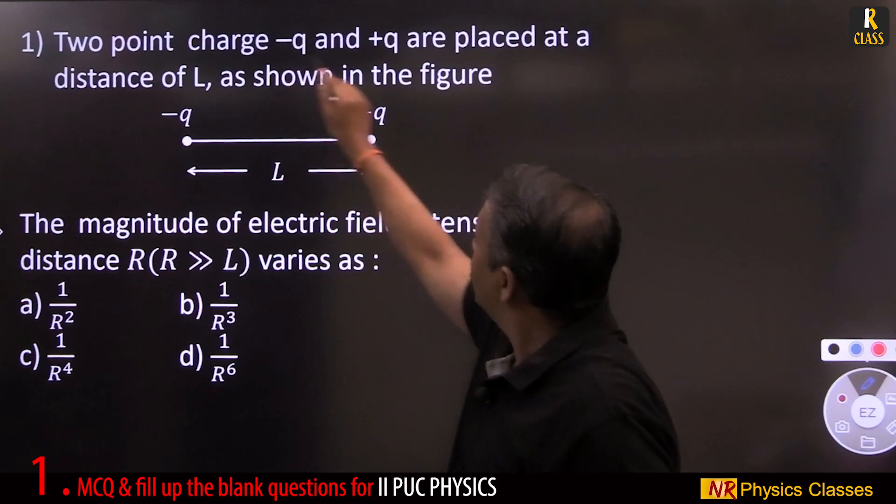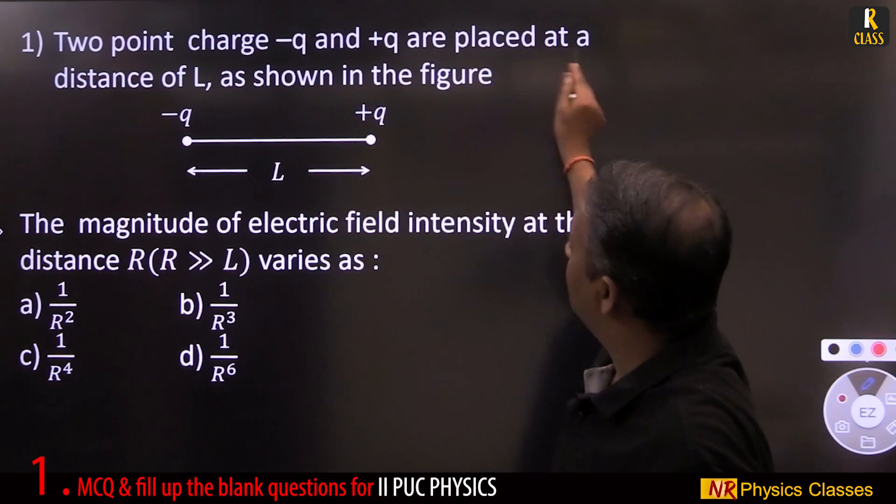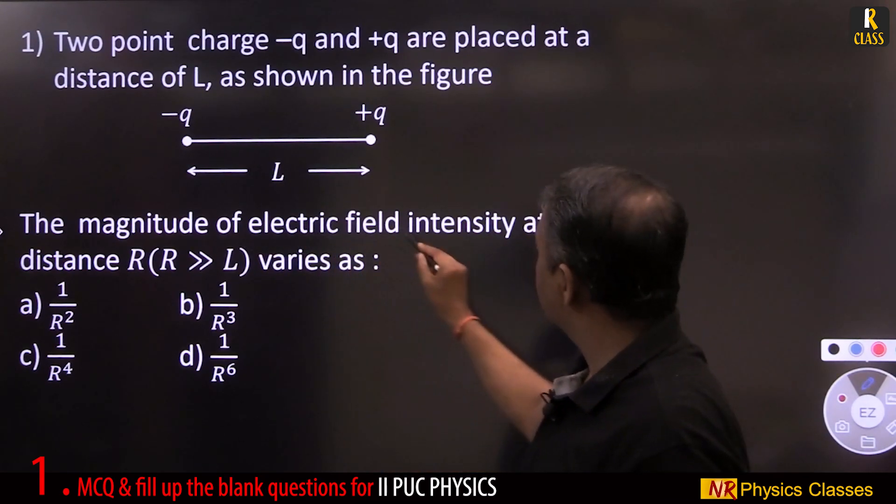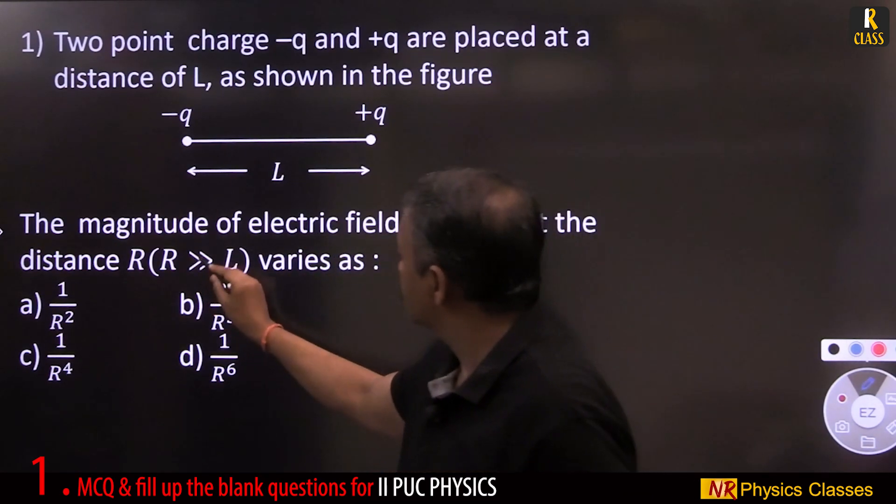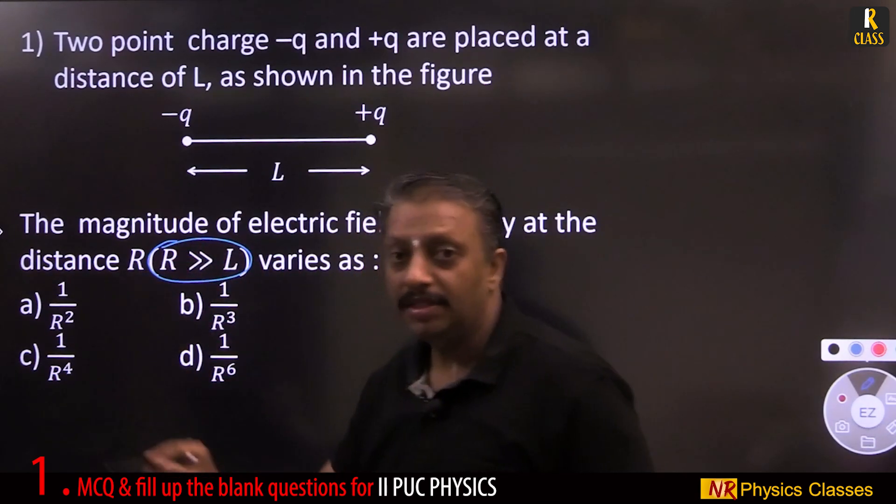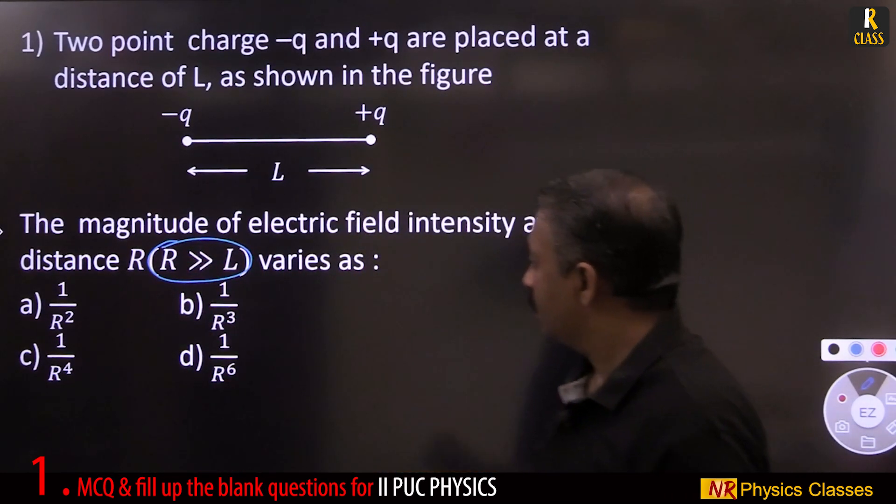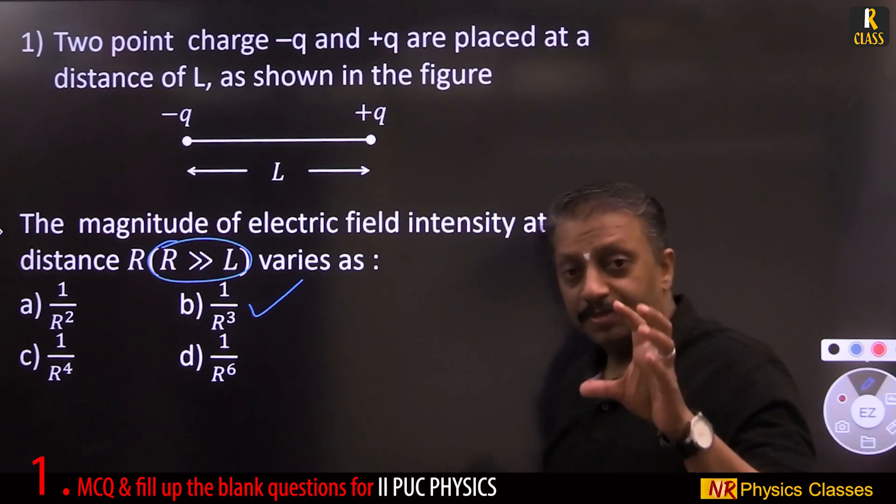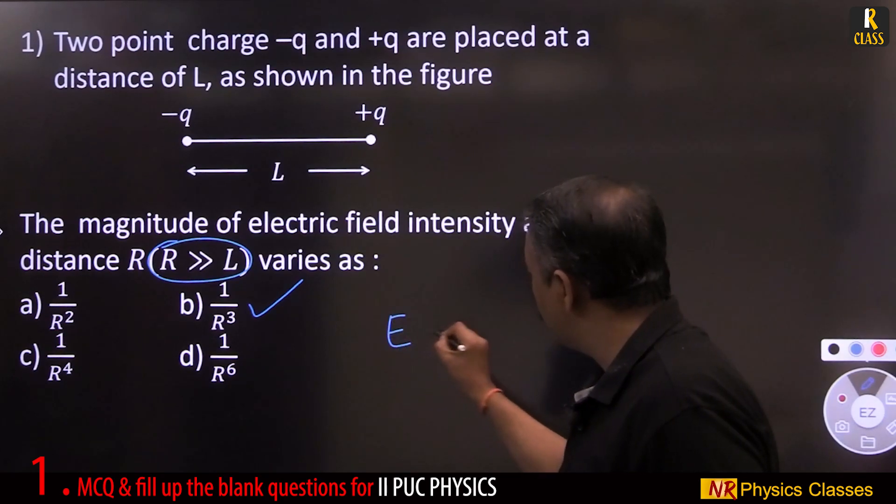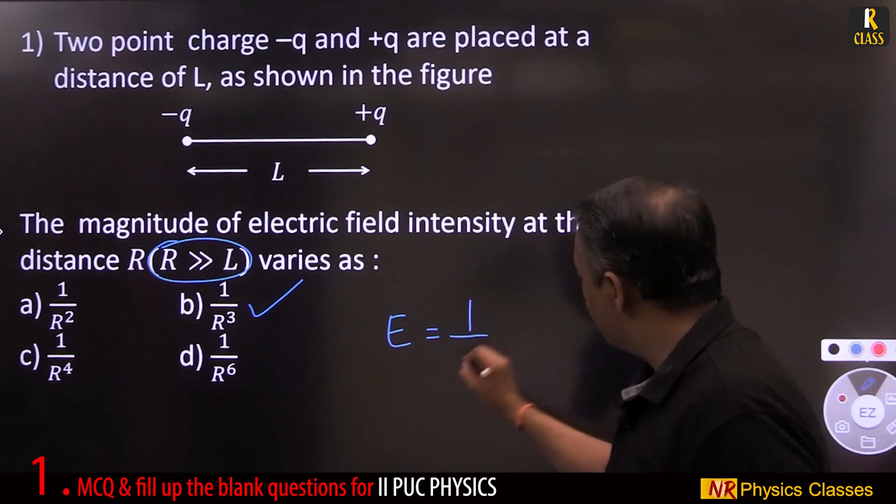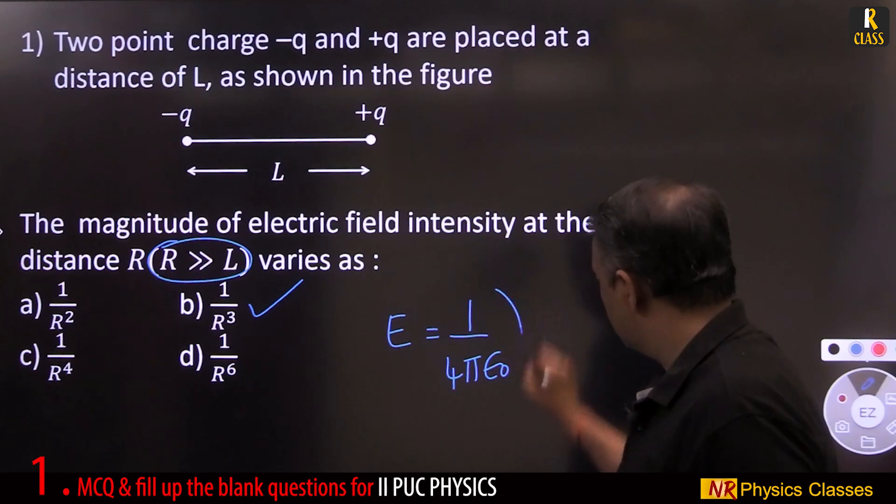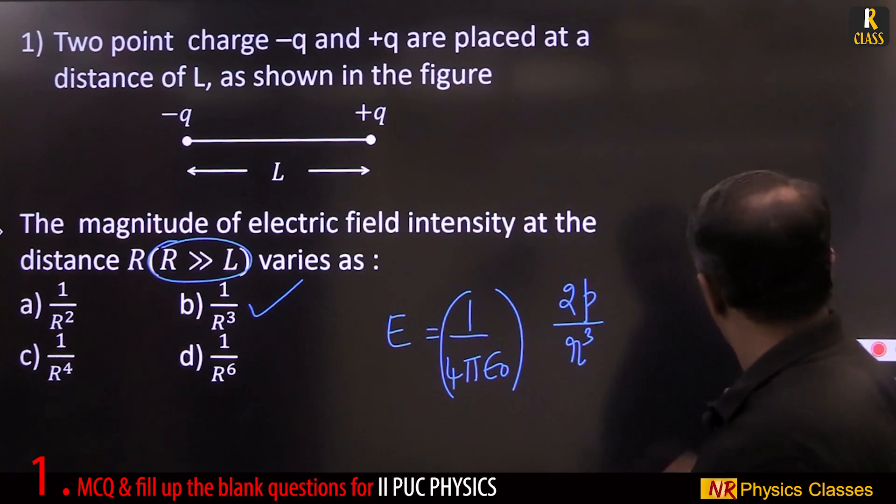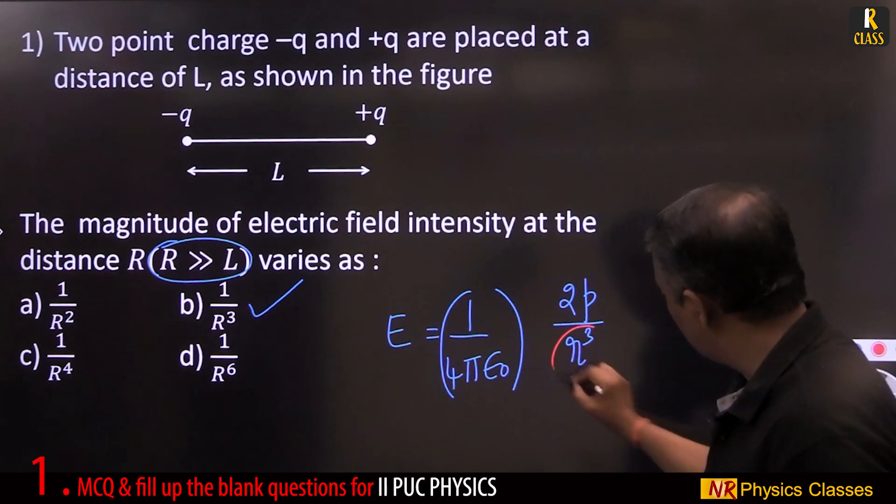Two point charges minus q and plus q are placed at distance L as shown in the diagram. The magnitude of electric field intensity at a distance r much greater than L, means for a short dipole, varies as 1 by r cube. Recall the expression for electric field due to short dipole: 1 by 4 pi epsilon naught, 2p by r cube. Just observe, 1 by r cube.